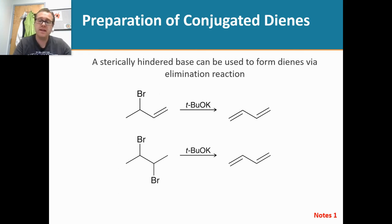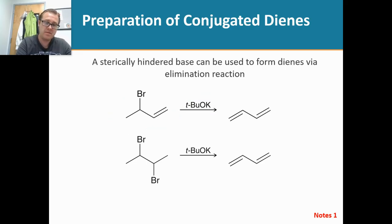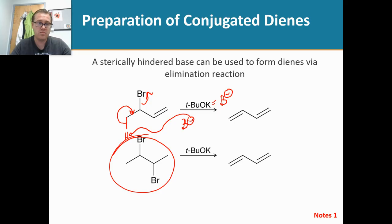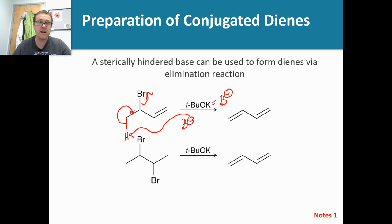To make dienes, we can take an allylic halide molecule and treat it with a strong bulky base, which gives us our diene. Mechanistically, the strong bulky base — represented as B minus — comes and grabs a proton, then kicks off the bromine to give us that molecule. You can also make dienes starting from a dihalide molecule. Practice working through the mechanism for that one, and if you have any questions let me know during class.